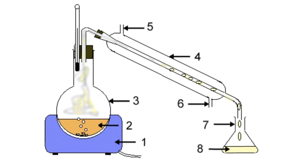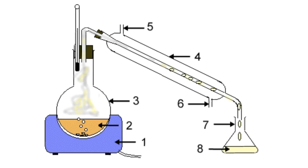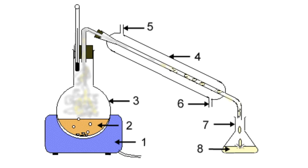Number one in the diagram would be our heating element — typically a hot plate or a Bunsen burner. Number two is pointing to the mixture. Number three is pointing to the vapors coming off of the mixture. The vapors are comprised of the substance that has the lower boiling point — that would be the one that boils off first. Those vapors go up into what's called a condensing tube; number four is pointing at the condensing tube.